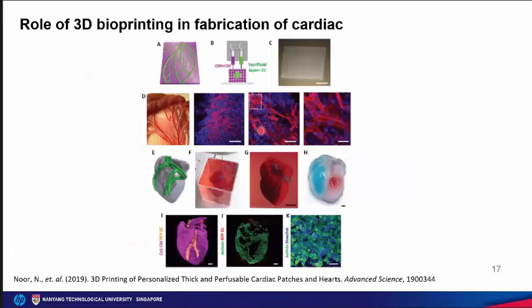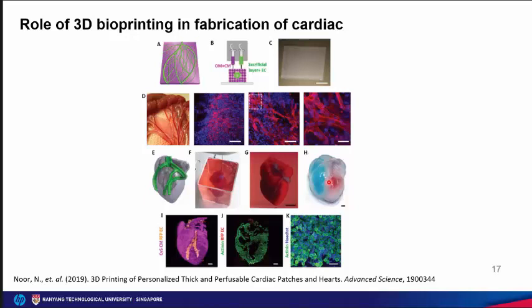For cardiac 3D bioprinting, decellularized cardiac ECM and sacrificial materials are used to reconstruct miniaturized cardiac constructs. The different inks are printed in a FRESH support bath to create different heart chambers and vascular networks. The 3D bioprinted miniaturized heart constructs show good structural integrity and facilitate perfusion of different colored dyes within the printed vascular network.